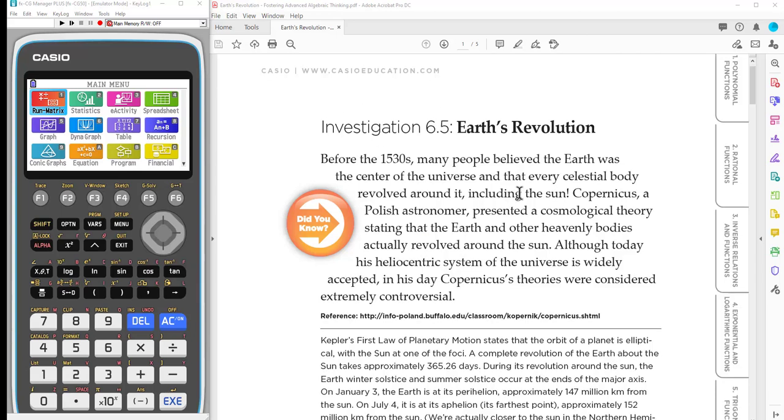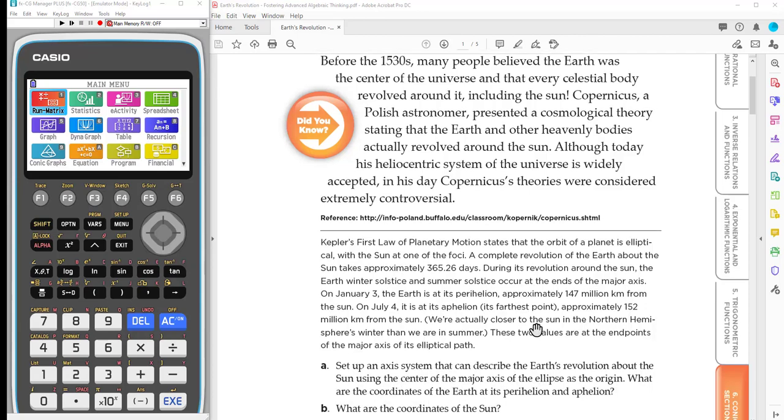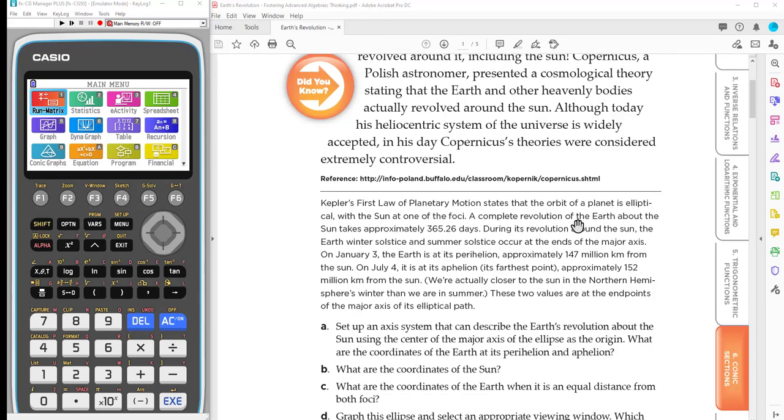So this activity is basically about the Earth's revolution and how it follows Kepler's first law of planetary motion, that the orbit is actually elliptical. So students are given some information and you'll notice that it's talking about the revolution, which is our year 365.26 days. But it talks about very, very large numbers: 147 million kilometers and 152 million kilometers, which is the distance from the Earth to the sun at its closest and farthest points.